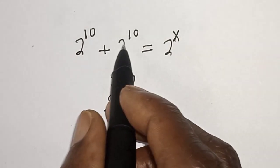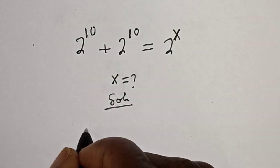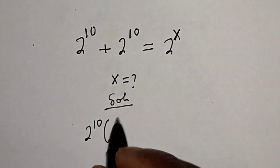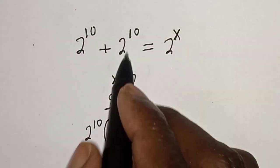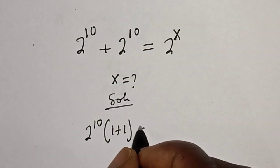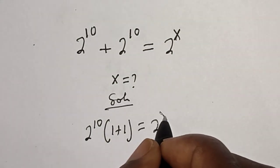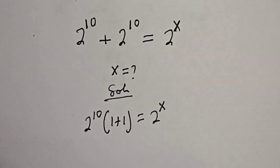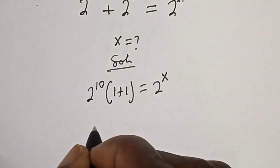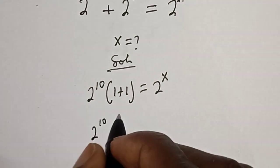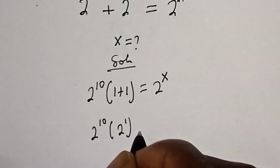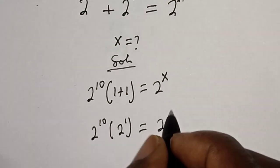From here, 2 raised to power 10 is common — let's bring it out. We have 2 raised to power 10, bracket: this divided by this is 1, plus this divided by this is 1, is equal to 2 raised to power x. Then this is 2 raised to power 10 times bracket 2 raised to power 1, equal to 2 raised to power x.